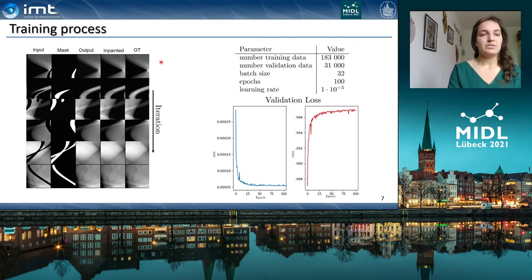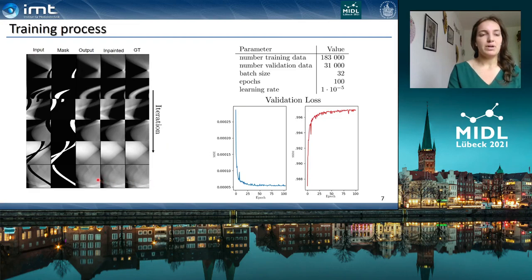By using only image patches of a size of 128×128 instead of the full 3D sinogram, over the training process we can see that the results are getting better and better and the output of the generator has more and more image structures.